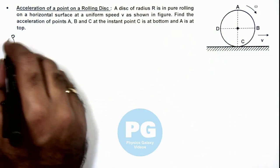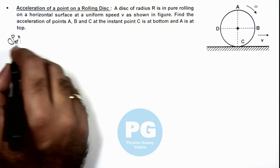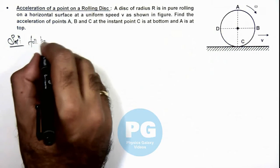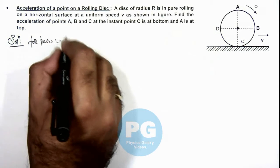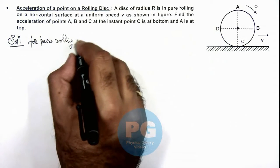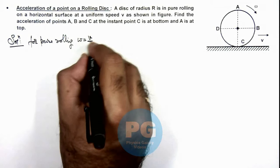Now in this situation, here we can write for pure rolling, the value of angular speed will be v by R.